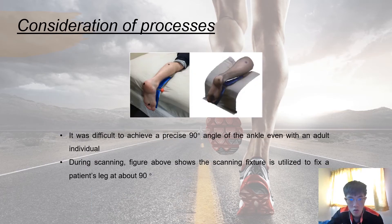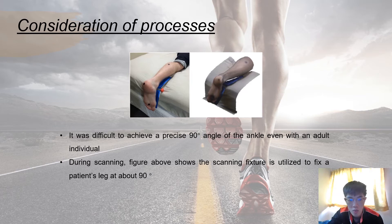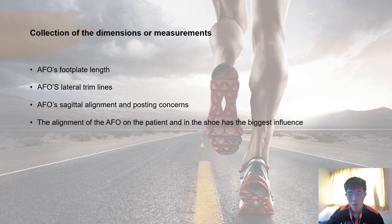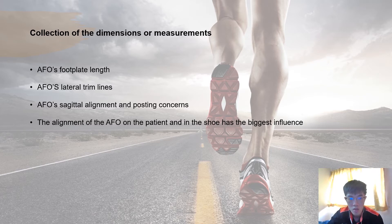Next is the consideration of the processes. It was difficult to achieve a precise 90-degree angle of the ankle even with an adult individual. During scanning, a bigger above-show scanning fixture is utilized to fix a patient's leg at about 90 degrees. The dimensions of measurement include the AFO foot plate length, lateral trim lines, circular alignment, and post length concerns.